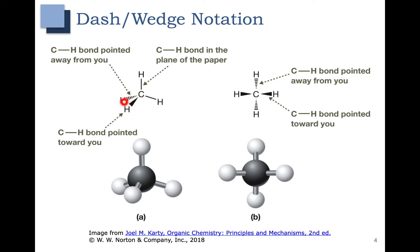We use this wedged line to show a bond that's sticking out towards you, implying that the hydrogen is closer towards you than the carbon. The dashed or hashed line is pointed away from you — you can think of it as going into the plane of the screen, with the hydrogen furthest away from you.